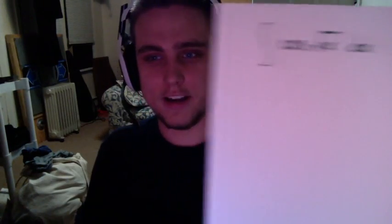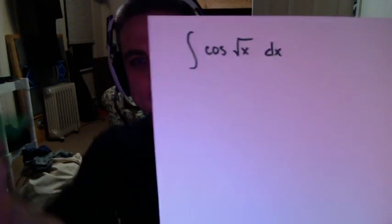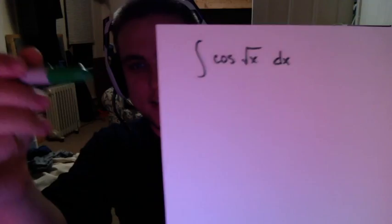Alright, so here's what we do. We've got an integral right here: cosine of square root of x, dx. Normally, the first thing you'd do is maybe a trig substitution, because we don't know any integrals for cosine of square root of x. But we've actually got to do something a little bit different here — we're going to start with a u-substitution.